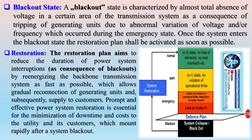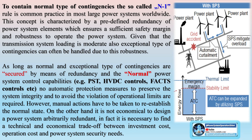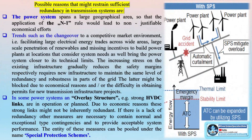The restoration plan aims to reduce the duration of power system interruptions by re-energizing the backbone transmission system as fast as possible, allowing gradual reconnection of generating units and subsequently supply to customers. Prompt and effective power system restoration is essential for minimization of downtime and costs to the utility and its customers. To contain normal type of contingencies, the N-1 rule is common practice in most large power systems worldwide, characterized by a predefined redundancy of power system elements ensuring sufficient safety margin and robustness.